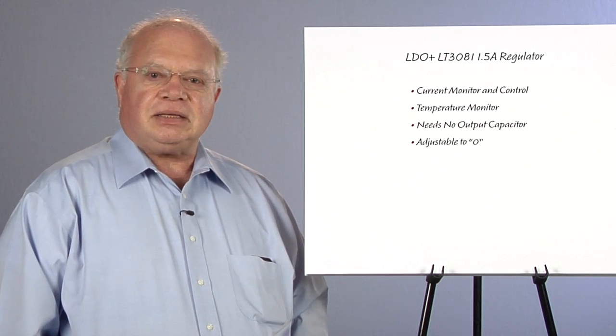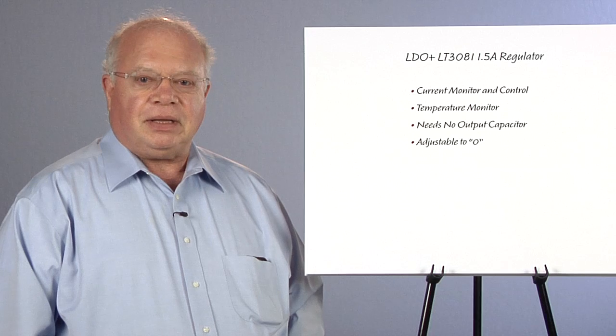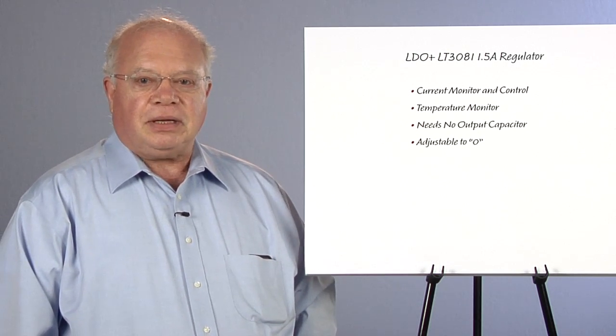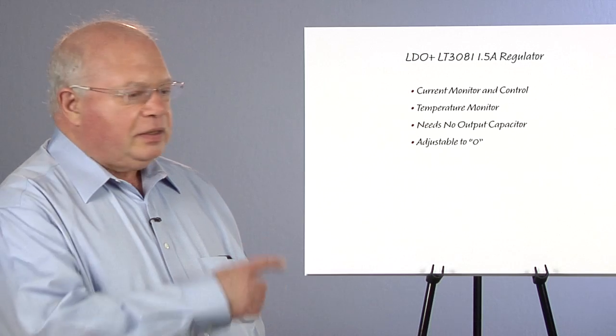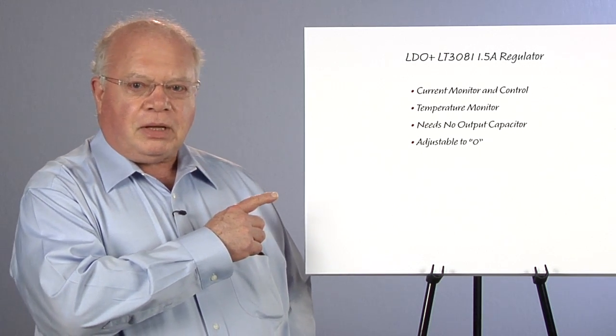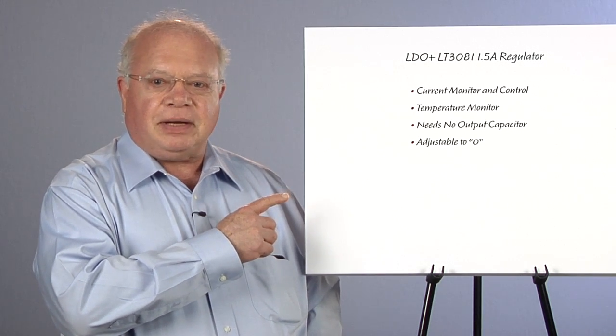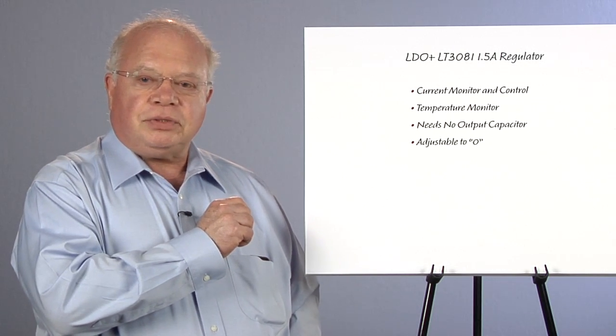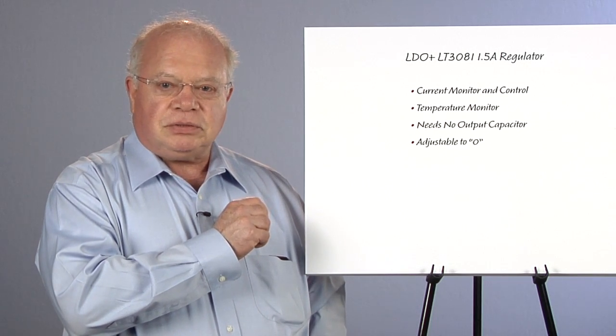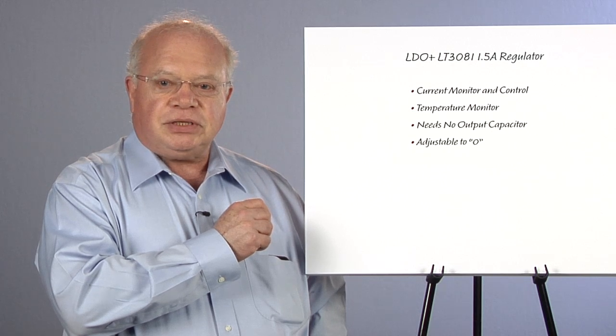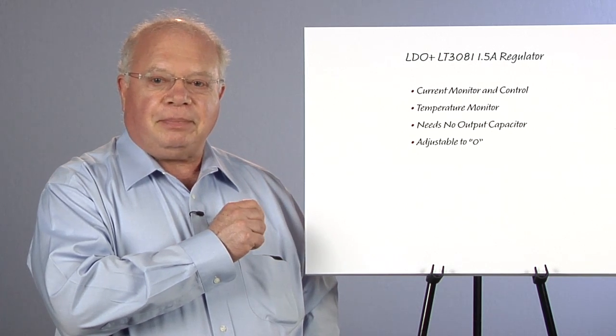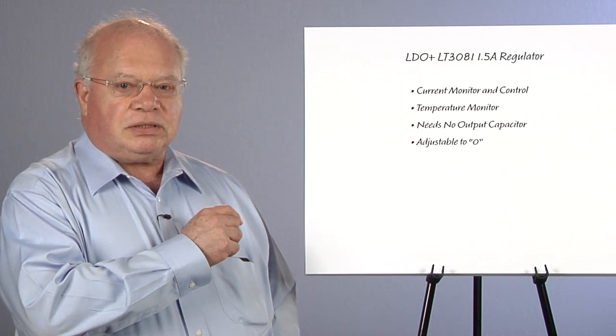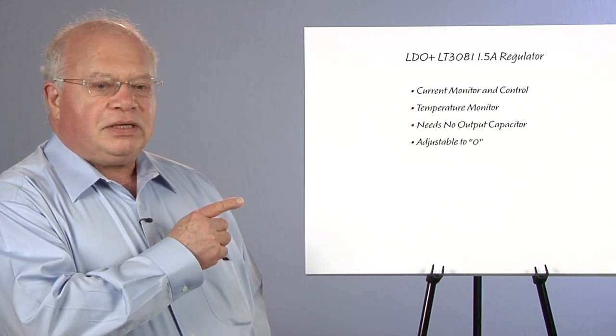Our Plus indicates that these do more than just regulate. They've got monitor and control functions as well as regulation. The LT3081 is designed to be a wide safe area industrial regulator. It'll operate with output voltages from 0 to 37 volts. It'll take reverse voltage and it will continue to supply power with large input output differentials because it's got a large safe area.